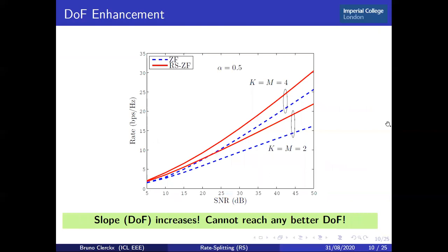The DOF enhancement translates into rate enhancement. With two transmit antennas and two users, the slope of rate vs. SNR is significantly increased with rate splitting at alpha = 0.5: instead of a slope of 1 with conventional schemes, we now have a slope of 1.5 — a 50% increase. Similarly, with four users and four transmit antennas, we again see a slope increase. Because of the optimality of rate splitting in terms of DOF, we cannot reach any better DOF or slope.